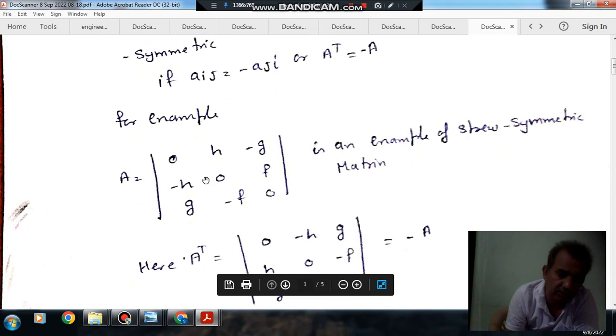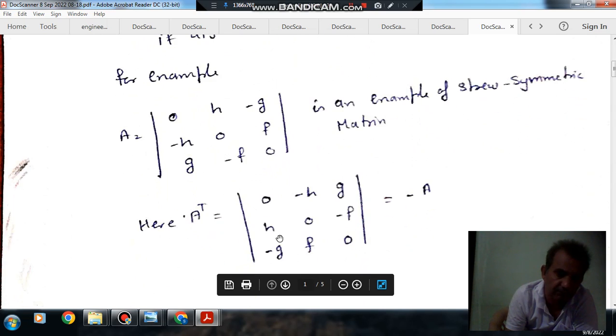This is a skew symmetric matrix. Because if you find out its transpose, then it is 0 minus h g. And this will be h 0 minus f. And this will be minus g f 0.